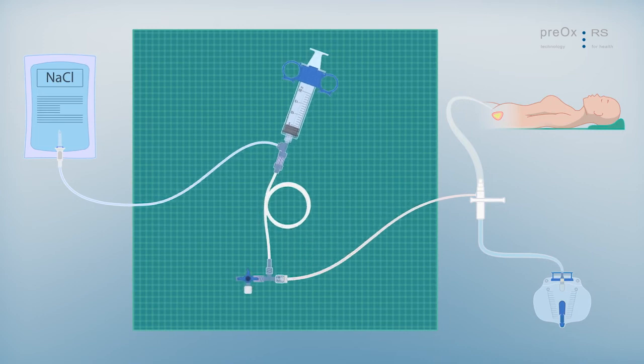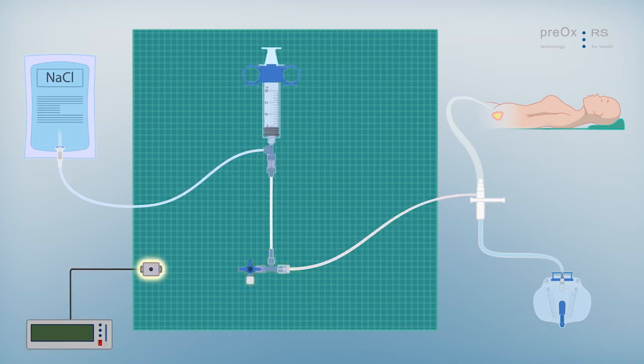Finally remove the yellow clip and connect the three-way stopcock to the pressure transducer.